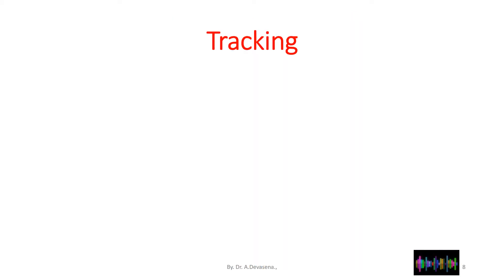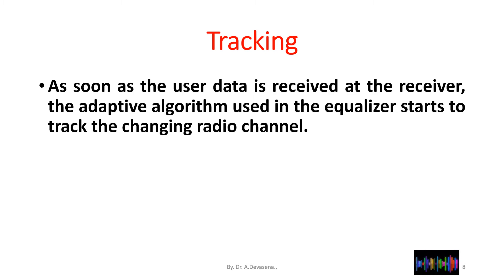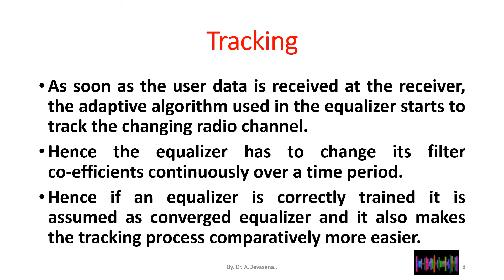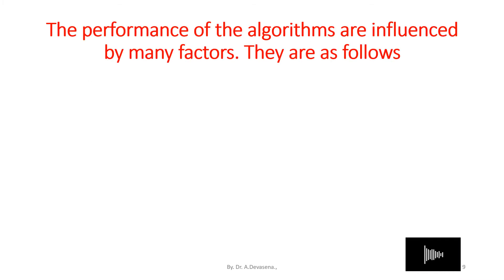Now we will discuss tracking. As soon as user data is received at the receiver, the adaptive algorithm used in the equalizer starts to track the changing radio channel. The equalizer continuously changes its filter coefficients over time. If an equalizer is correctly trained, it is considered a converged equalizer, which makes the tracking process comparatively easier.